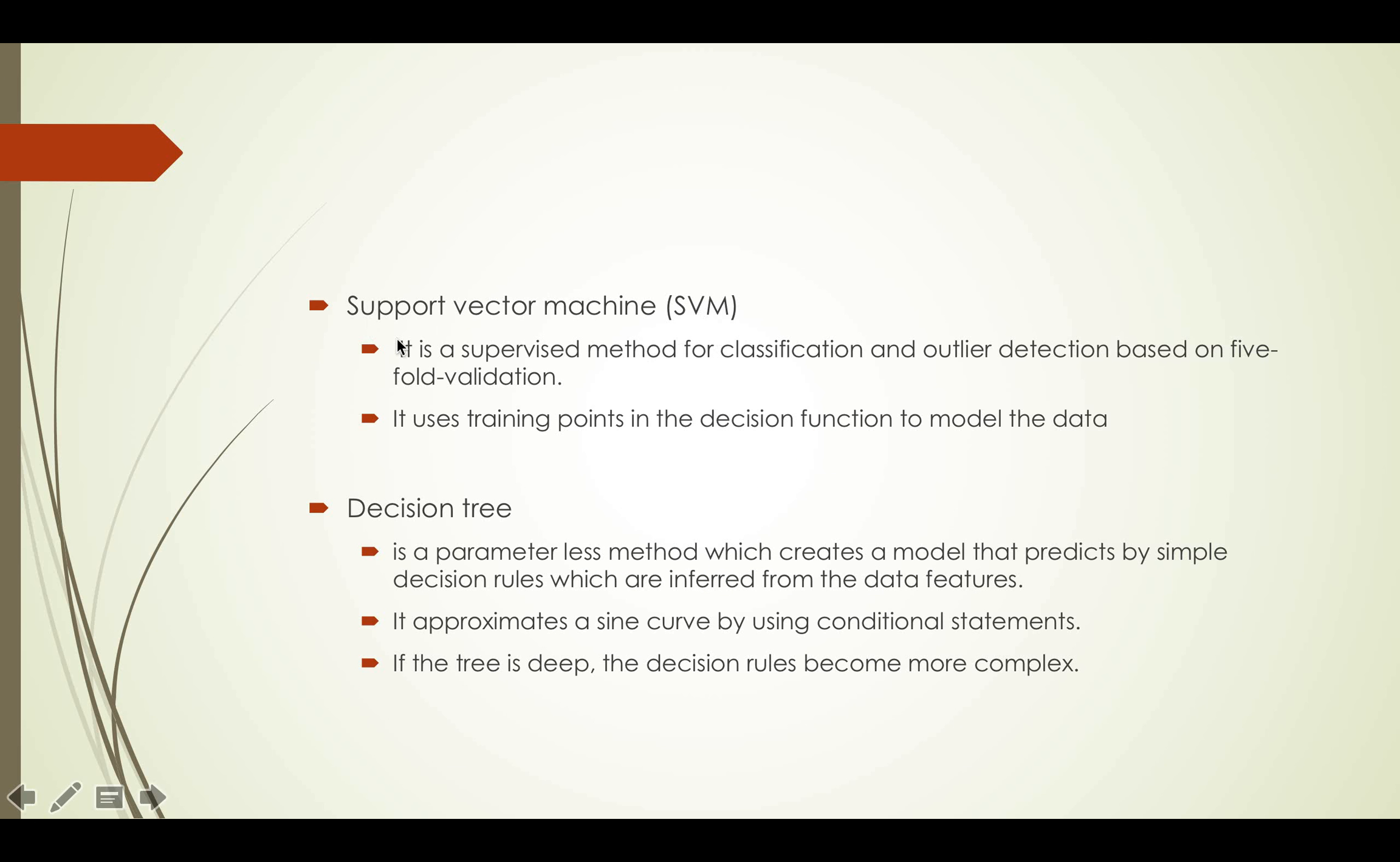Support Vector Machine is a supervised method for classification and outlier detection based on five-fold validation. It uses training points in the decision function to model the data.